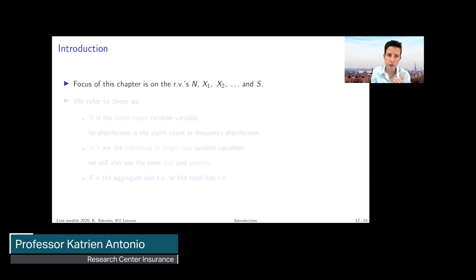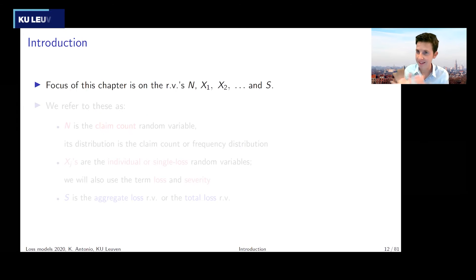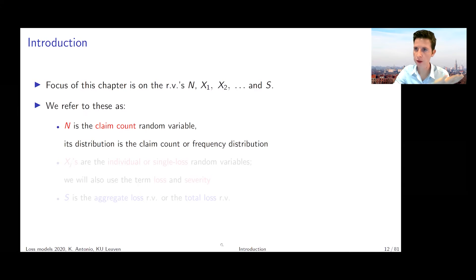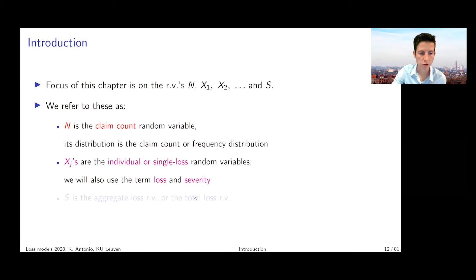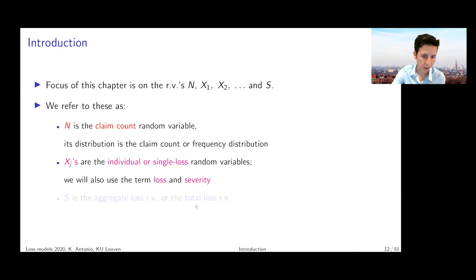In this chapter we're going to focus on the random variables N, the Xj's, and S, the total aggregate loss. N is the claim count random variable, and its distribution is referred to as the claim count or frequency distribution. The Xj's are the individual or single loss random variables — we call them the losses or the severities. And S is the aggregate loss or total loss random variable.